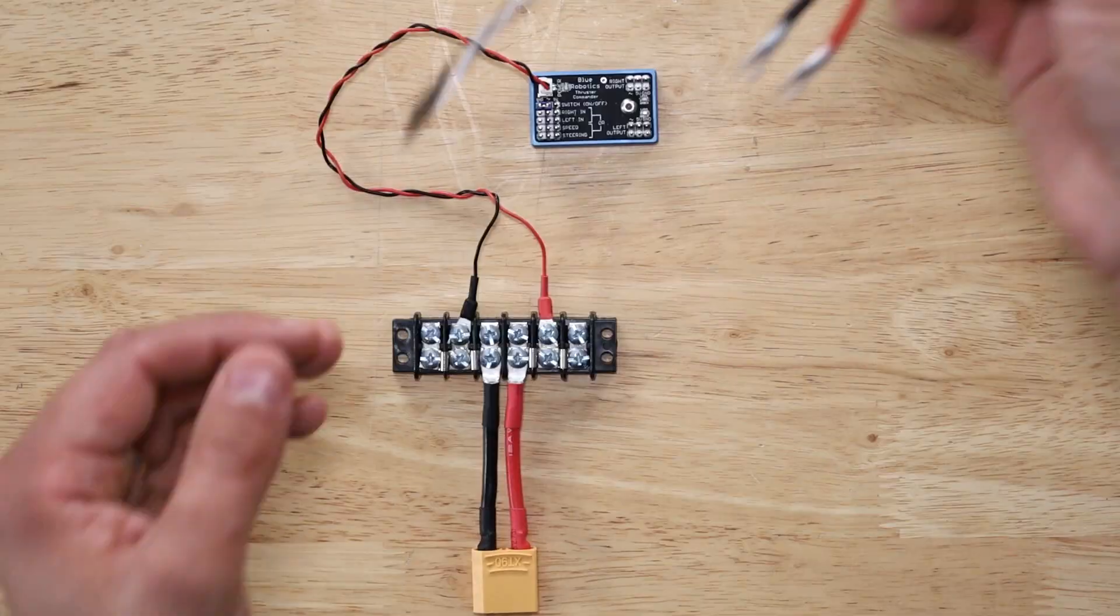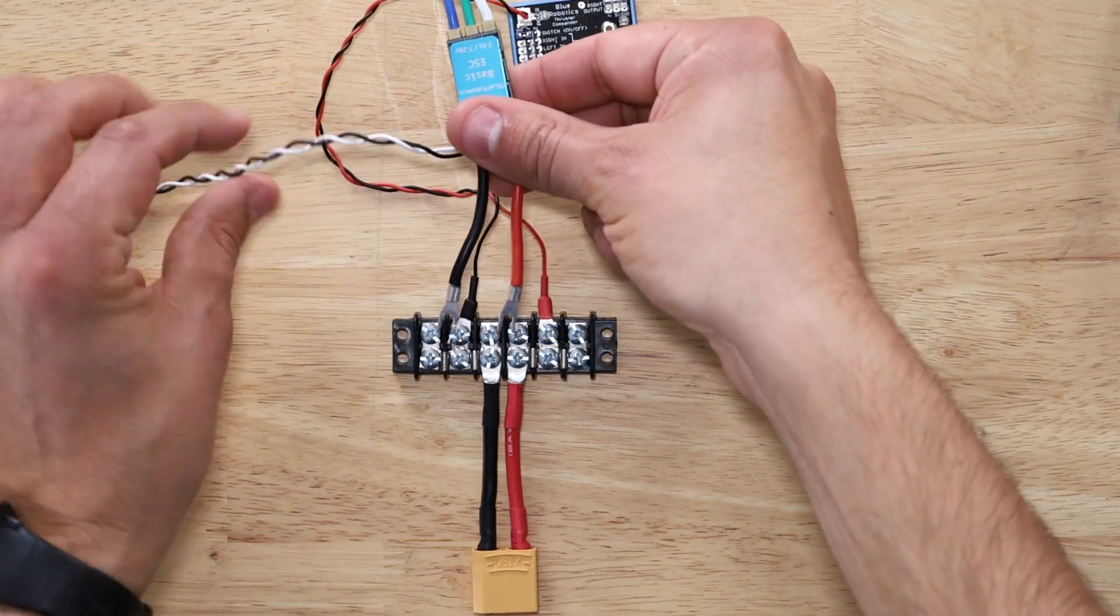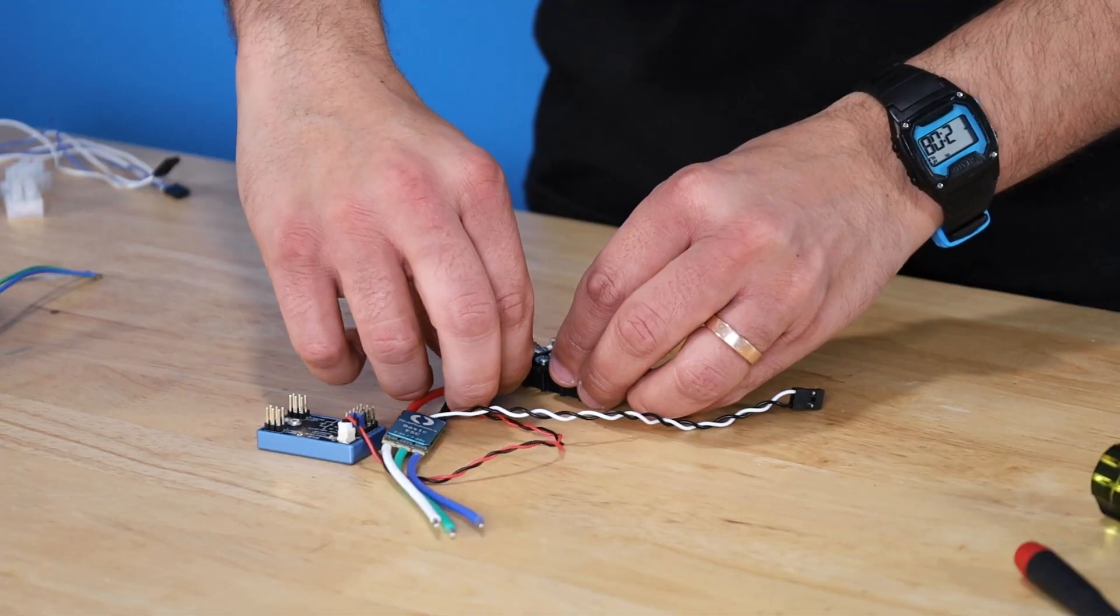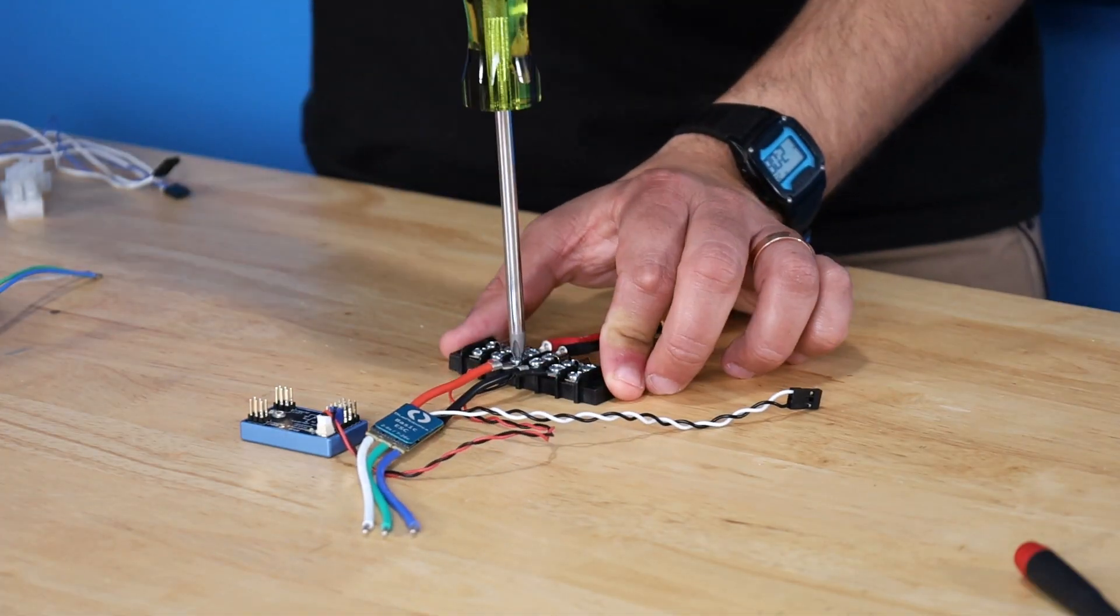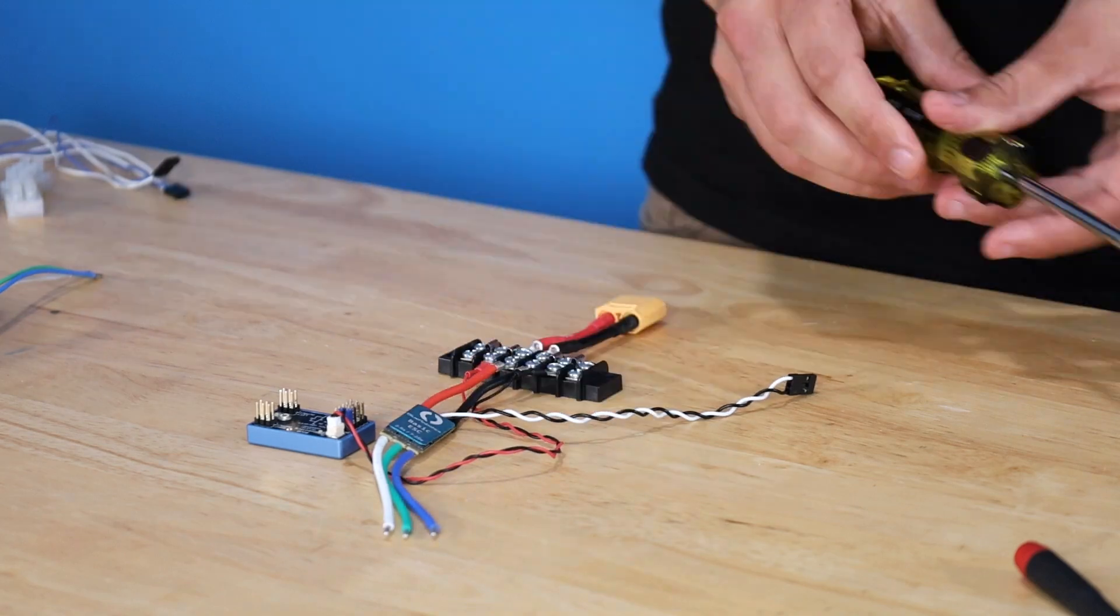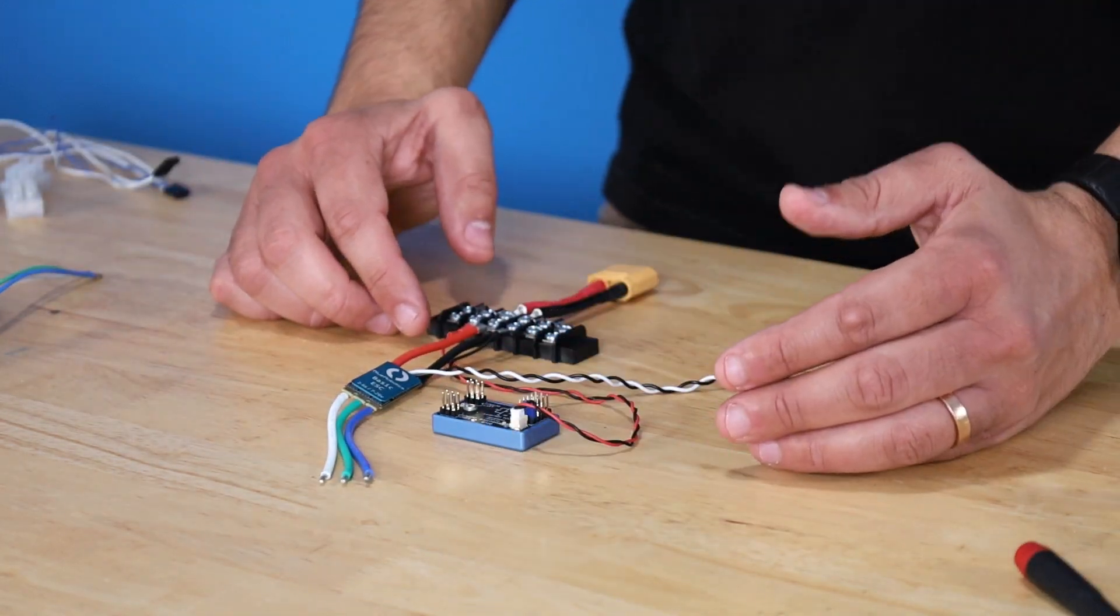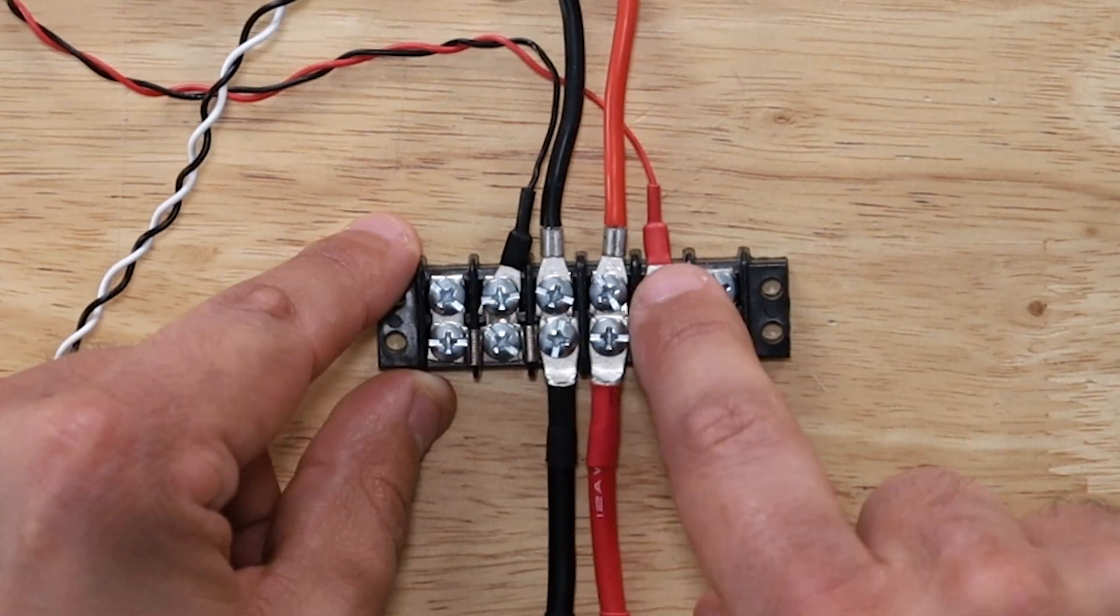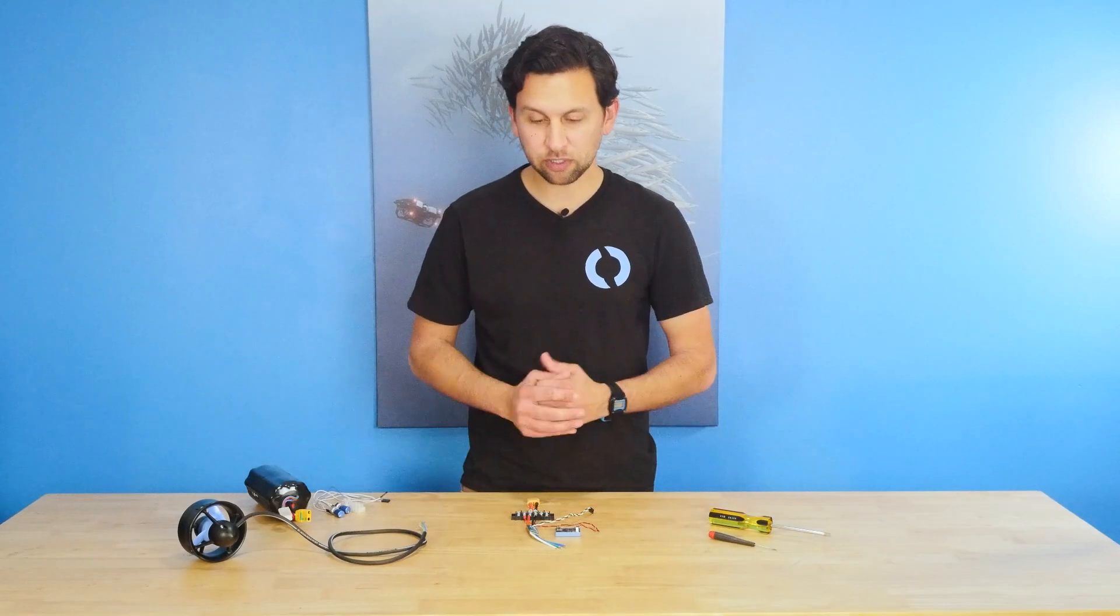All right, then we need to connect up the speed controller. I'm going to do that up here on the same side, again matching up red and black. Okay, we've got all of the power connected up here now. Let's just double check that all the blacks and all the reds are grouped together, and we don't have any of those mixed up.